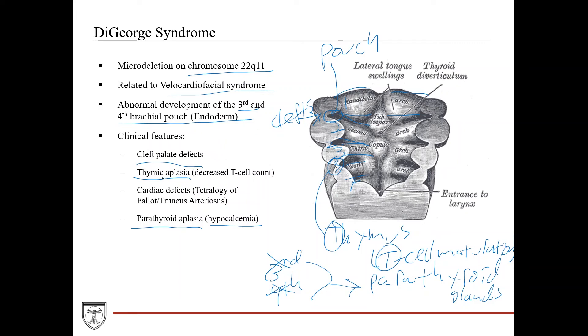And one thing I'll point out with thymic aplasia is they'll have a decreased T cell count. And as a result of that, these patients often suffer from recurrent infections and being immunocompromised. And then lastly here, these patients often have cardiac defects.